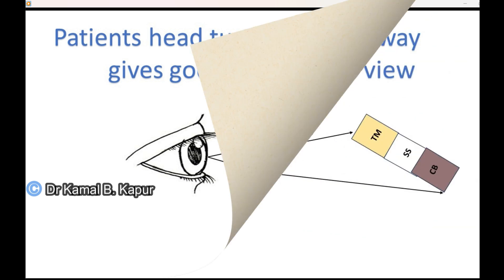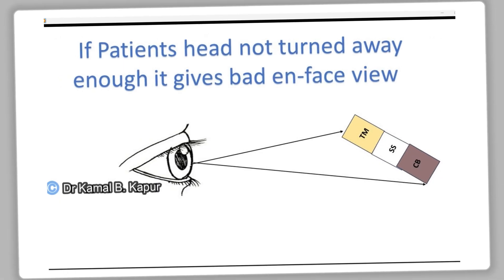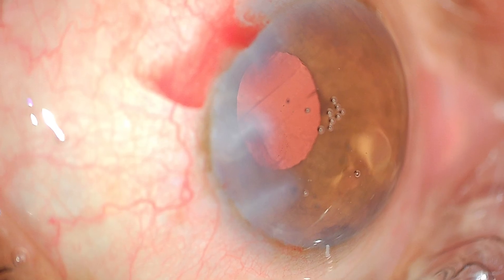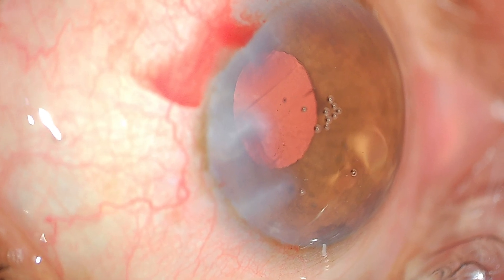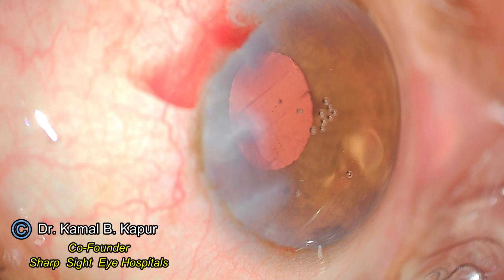The patient is tilted 45 degrees away from the surgeon and you also tilt your operating microscope, so the approximate angle between the observer and the angle is 90 degrees. Only then will you be able to see the trabecular meshwork, Schlemm's canal, and the ciliary body. If the patient positioning is not good, you will have problems with visualization and will end up making a mistake.